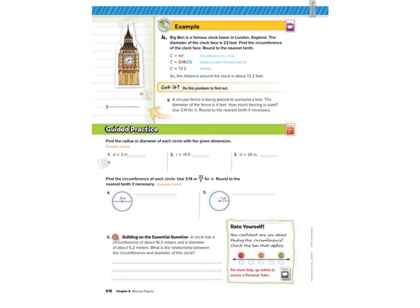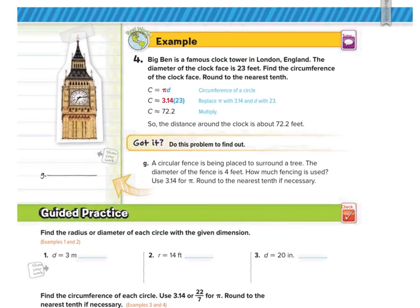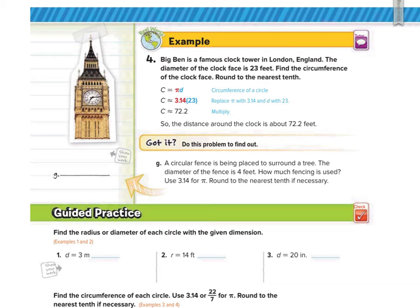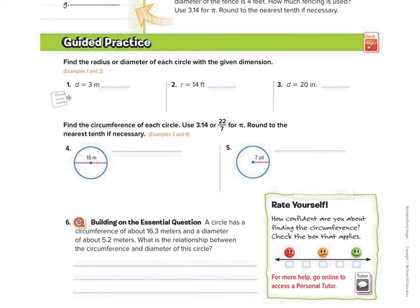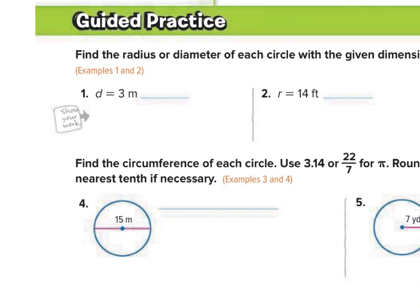There's an example showing how to do a word problem about circumference, but let's move to the guided practice questions 1 through 5. In number 1, we're finding the radius from the diameter, so we divide the diameter by 2: radius equals diameter divided by 2, which is 3 divided by 2, giving 1.5 meters.